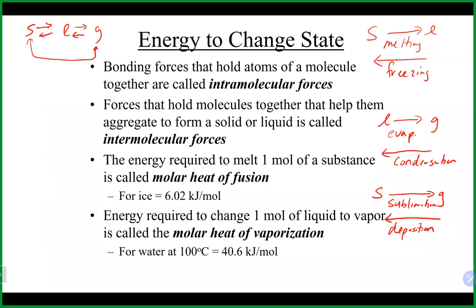As we change states, there are six processes that could occur: melting, freezing, evaporation, condensation, sublimation, or deposition. They all involve energy. There's a certain amount of energy to change the temperature of a substance, and a certain amount of energy required just to do the phase change itself — to take something from one phase to the next. There are two types of forces that play a role in the energy required.